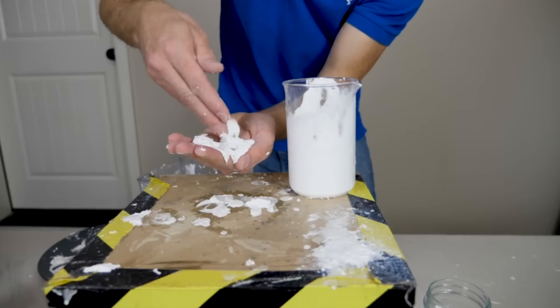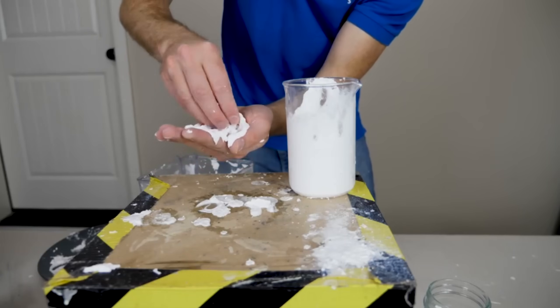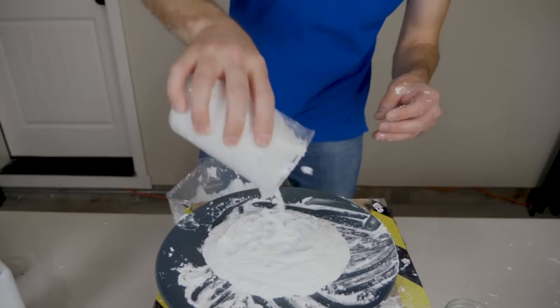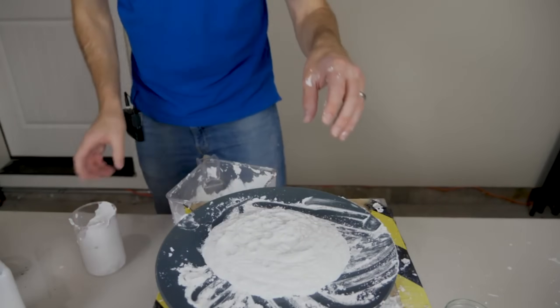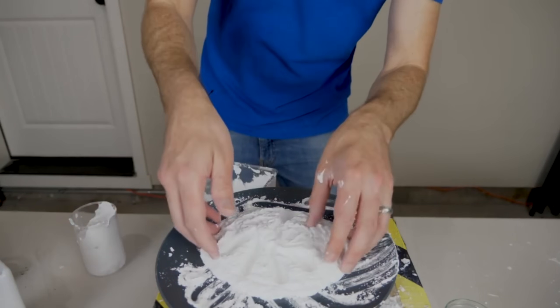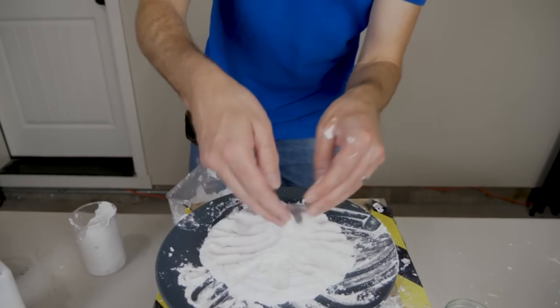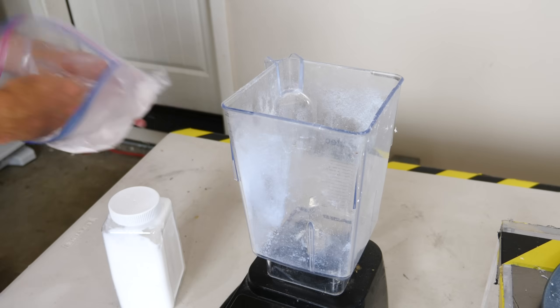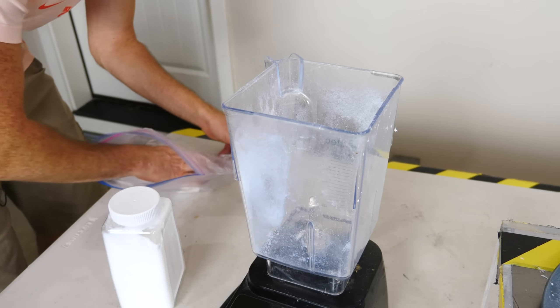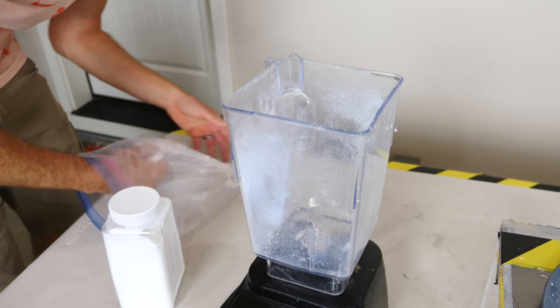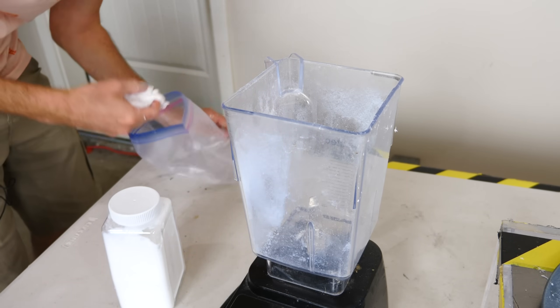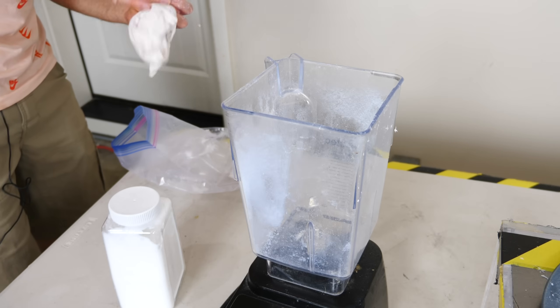But I decided to see what would happen if we gave dry water a little bit different texture. What if instead of making it like a dry liquid, we made it like a dry slime or some non-Newtonian fluid. So I made myself some homemade slime, put it in the blender, and then added some fumed silica, and this is what I got.